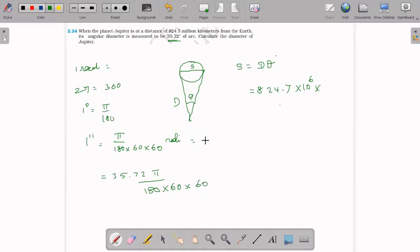One second is equal to how many radians? 4.85 times 10 to the power minus 6 radians. This is one second in radians.